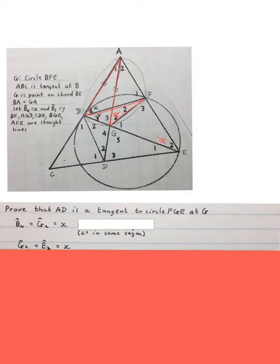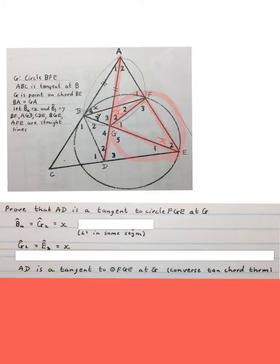They are equal to X. Then we can just write AD is a tangent to the circle FGE at G. My reason would be converse tan chord theorem, because that angle there is equal to that angle, that'll be a tangent to the circle over there, converse tan chord.